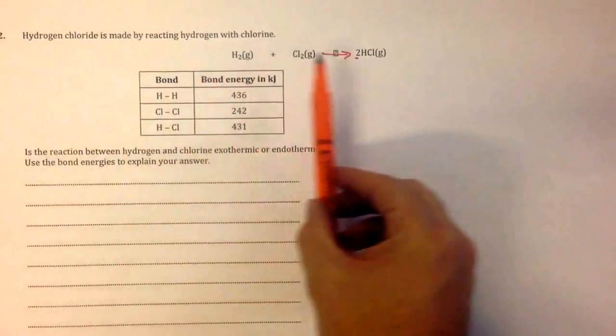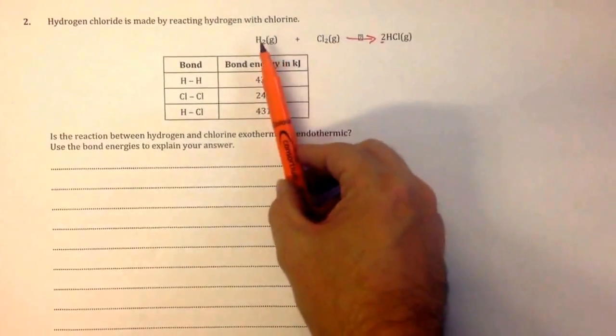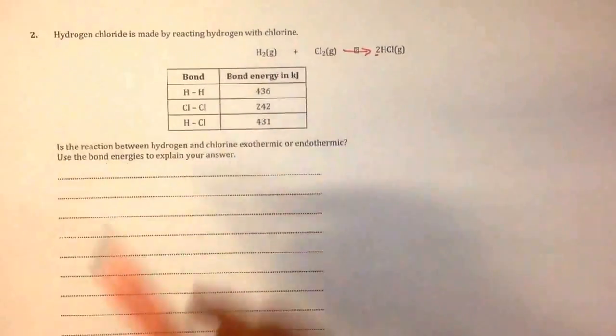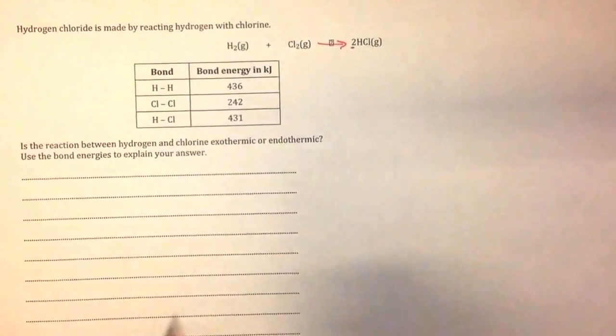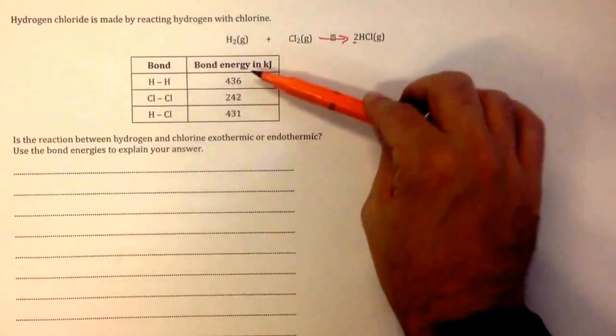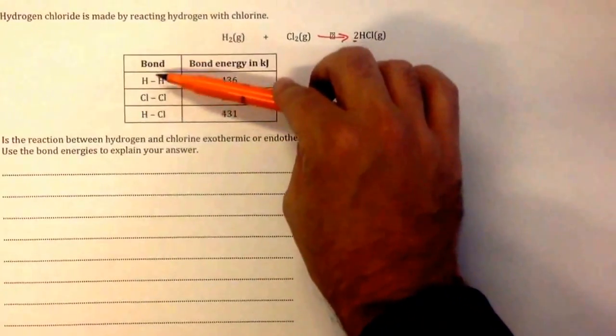This question talks about making two moles of HCl from one mole of hydrogen gas and one mole of chlorine gas. We're given the bond energies in kilojoules for the types of bonds.